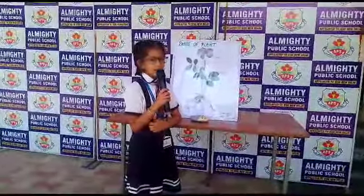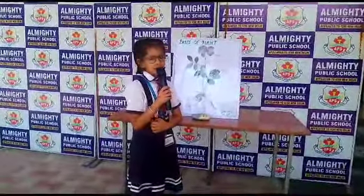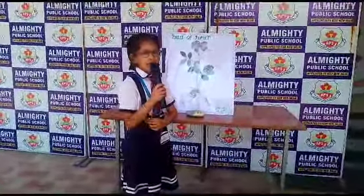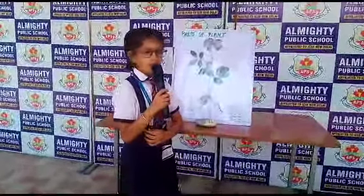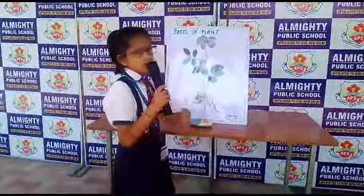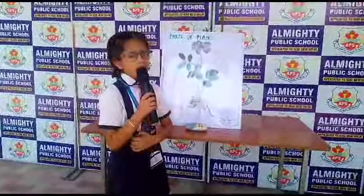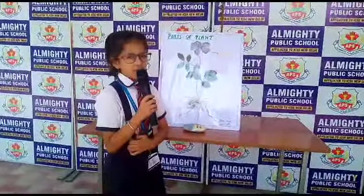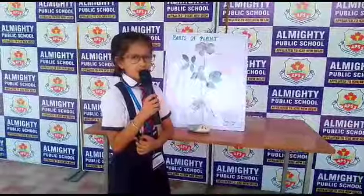The part of the plant in the soil or below the ground is called the root system. There are two types of root: fibrous root and tap root.